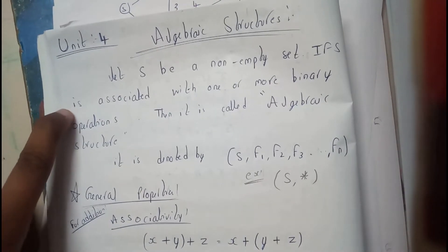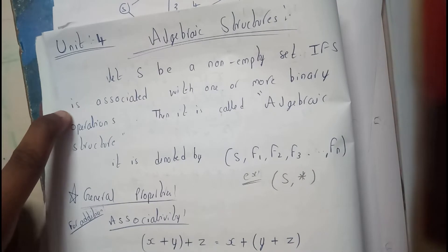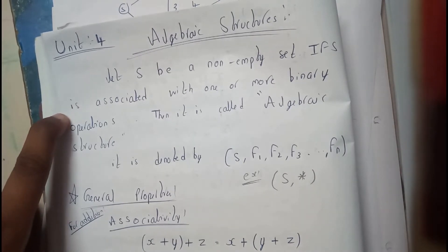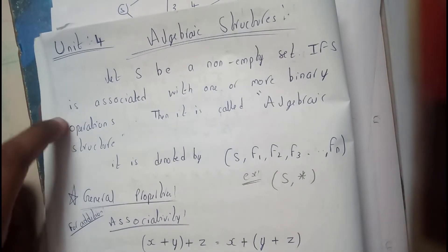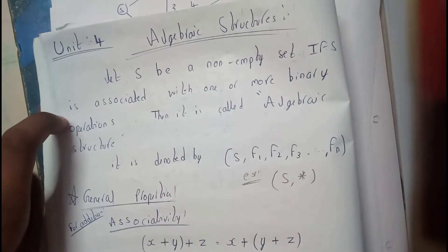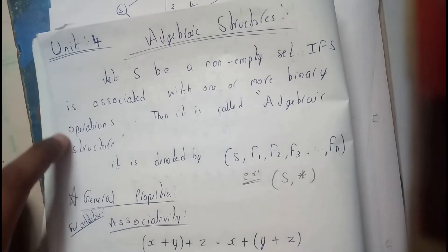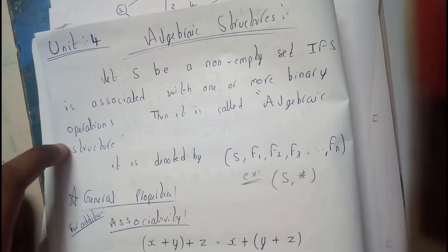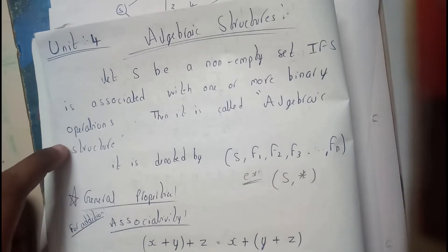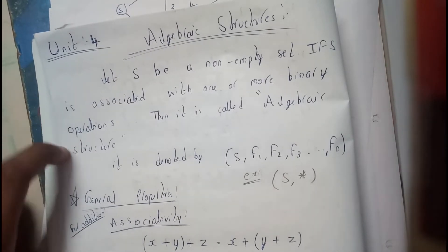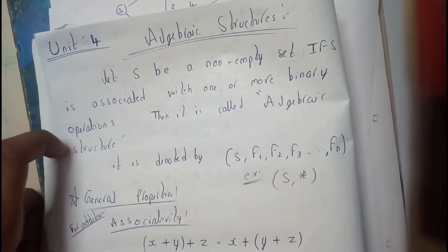Algebraic structure: Let S be a non-empty set. If S is associated with one or more binary operations, then it is called an algebraic structure. It is denoted by (S, f1, f2, f3, ..., fn), where S is a non-empty set and f1, f2, f3 are the binary functions. They may be star, multiplication, division, modulo, plus, or anything.